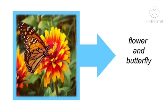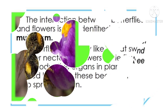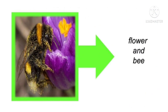The next example is the relationship between a flower and a butterfly. The interaction between butterflies and flowers is also identified as mutualism. Butterflies generally like to eat sweet juice or nectar on flowers, while flowers as reproductive organs of plants are helped because these beautiful insects help spread pollen. The same relationship example goes with the bees and flowers.